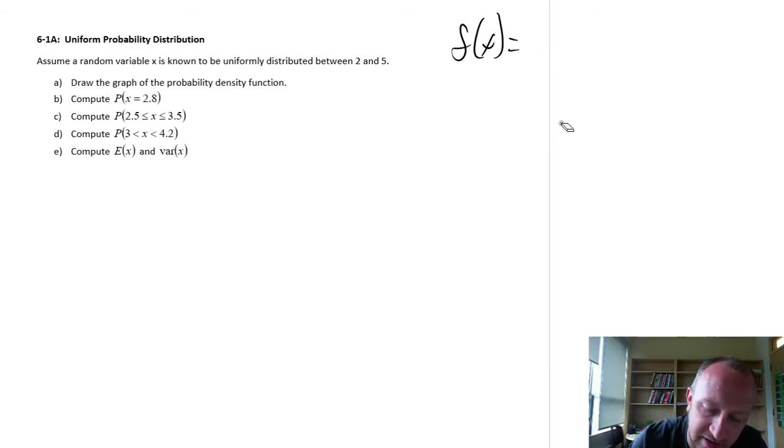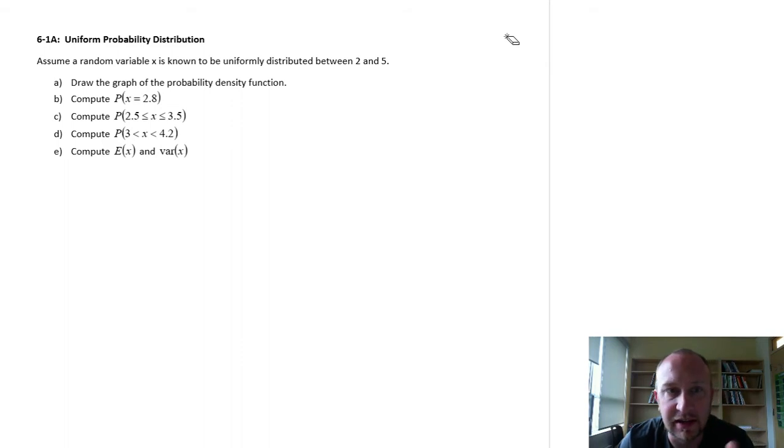Let's just get into this problem. Here we have a random variable x is uniformly distributed between 2 and 5.